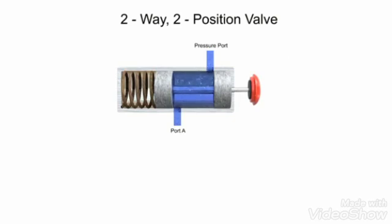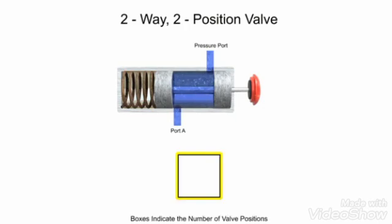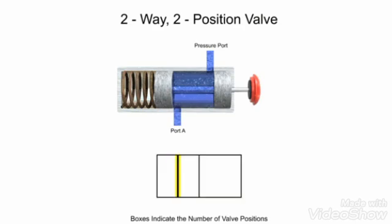To simplify fluid system drawings and schematics, all valves can be represented graphically. Boxes, sometimes called envelopes, are used to indicate the number of valve positions and functions. Since this is a two-position valve, its graphic representation has two adjacent boxes. Continuous lines are used to indicate fluid flow between ports. For complex valves, the ports may also be labeled.